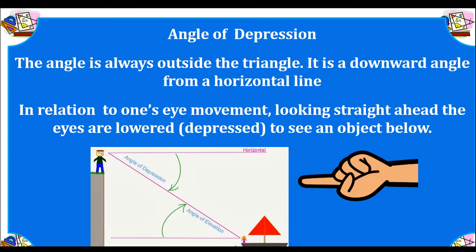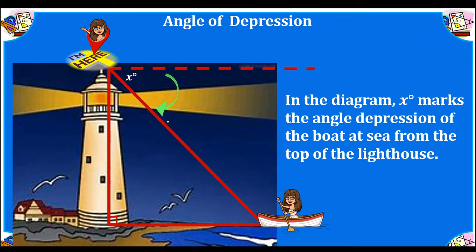Now, the angle of depression is looking straight forward first and then looking down, and that's what creates an angle of depression. Again, let's create our right triangle. The angle of depression is on the outside of our triangle. In the diagram, X marks the angle of depression of the boat at sea from the lighthouse. The gal at the lighthouse is looking down at the boat — first she's looking out and then she looks down, creating an angle of depression.